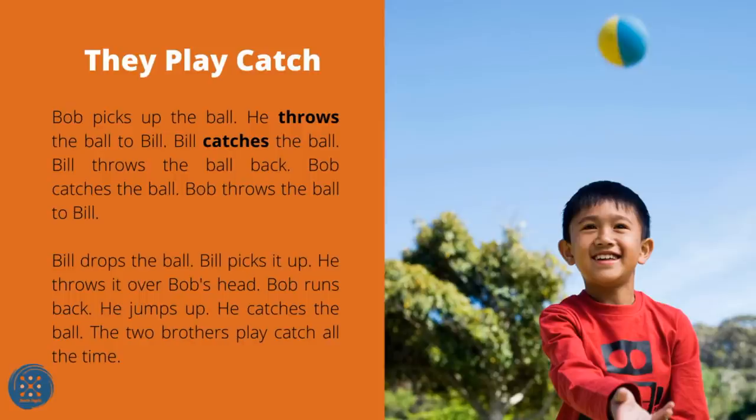They Play Catch. Bob picks up the ball and throws it to Bill. Bill catches the ball. Bill throws the ball back. Bob catches the ball. Bob throws the ball to Bill. Bill drops the ball. Bill picks it up and throws it over Bob's head. Bob runs back, jumps up, and catches the ball. The two brothers play catch all the time.